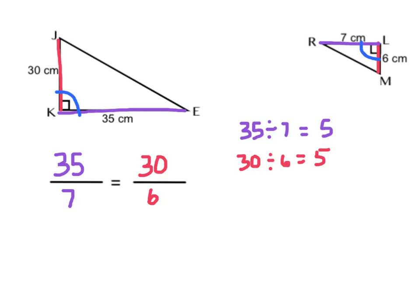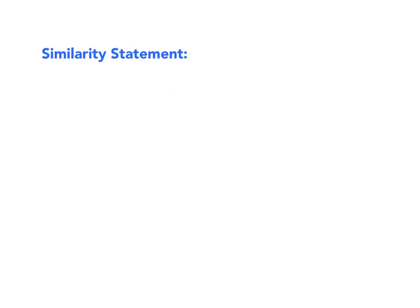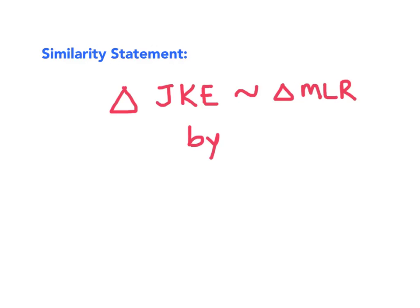Therefore, I know my two sides are proportional. This last similarity rule also told us the included angles have to be congruent, and we know that angle K is congruent to angle L because they are both 90 degrees. The last thing we need to do is write our similarity statement. If it helps to redraw one of those triangles so they look similar, please do that. I'm going to call the large triangle JKE, and say that triangle JKE is similar to triangle MLR. We know that's true by the SAS rule.